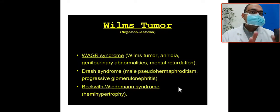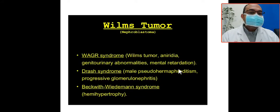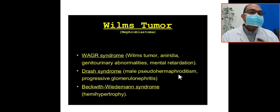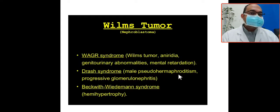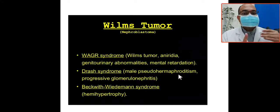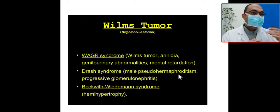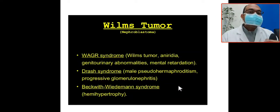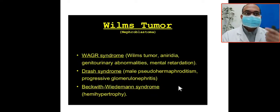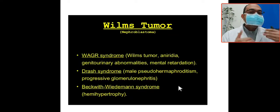What are the syndromes associated with Wilms' tumor? It will be WAGR syndrome: Wilms' tumor, aniridia, genitourinary abnormalities, and intellectual retardation. Another syndrome is Drash syndrome: intersex or male pseudohermaphrodism and progressive glomerulonephritis or nephrotic syndrome. Another syndrome is Beckwith-Wiedemann syndrome: hypoglycemia, hemihypertrophy, aniridia, and ear pits.